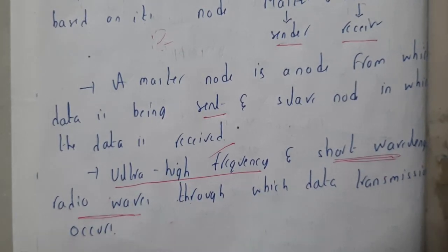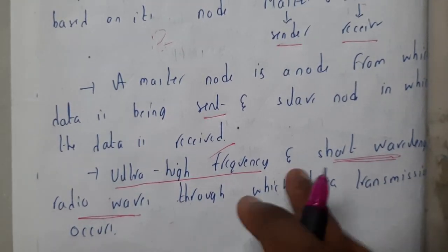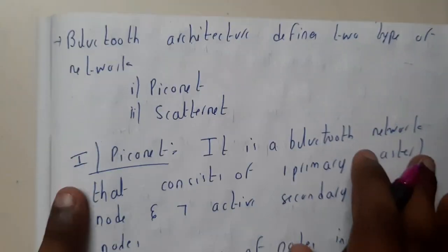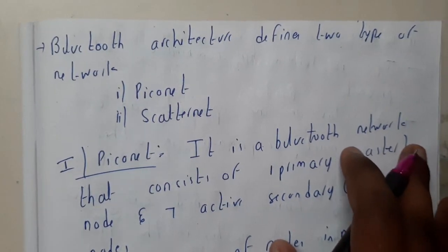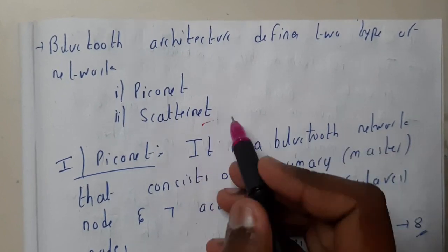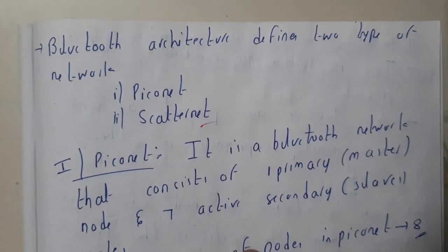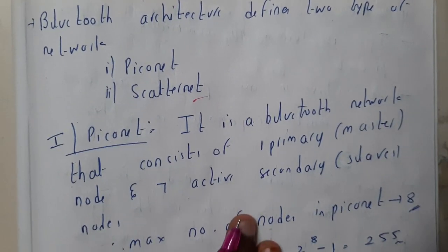Bluetooth architecture can be represented in two different ways: the first one is a piconet and the second is scatternet.